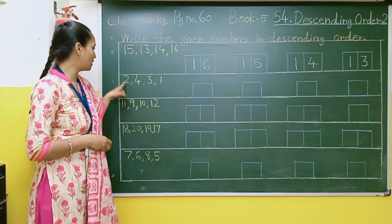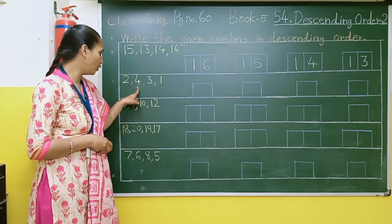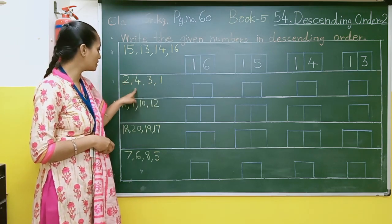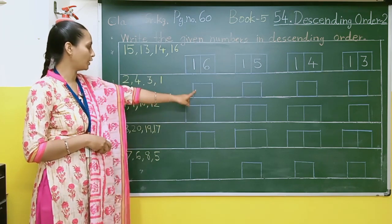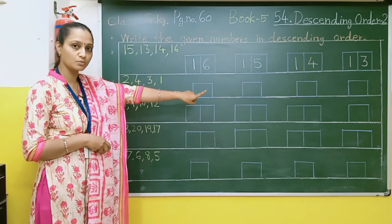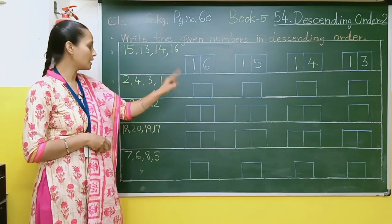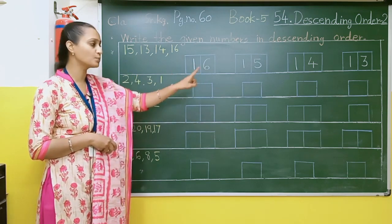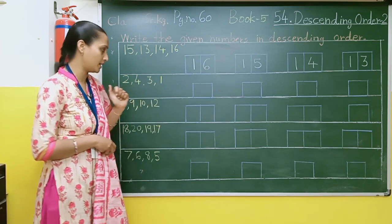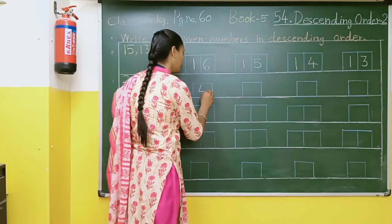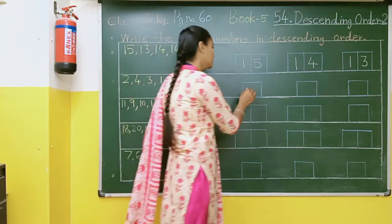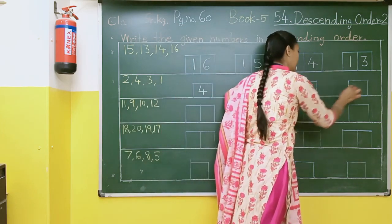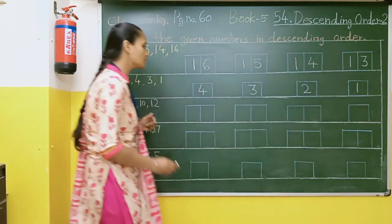Now here the given numbers are 2, 4, 3, 1. So here the biggest number is 4. So here we will write 4, then 3, then 2, and then 1. Okay students?